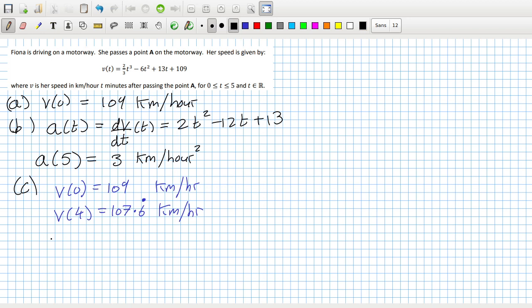I'm not going to be tricked again. 2/3 times 4 power 3 minus 6 times 4 squared plus 13 times 4 plus 109. So that is 107.6 reoccurring. Now I'll calculate her maximum speed by using differentiation.